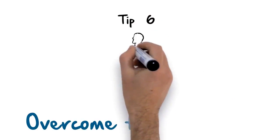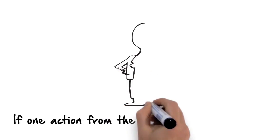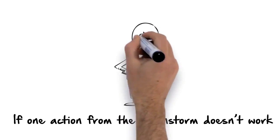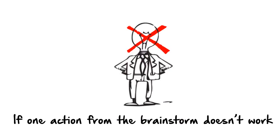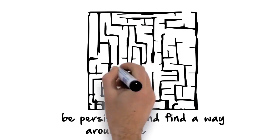Tip 6: Overcome the Obstacles. If one action from the brainstorm doesn't work, try another. Don't give up after the first challenge or blame your circumstances. Instead, be persistent and find a way around the obstacles.